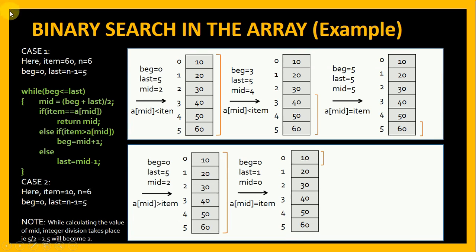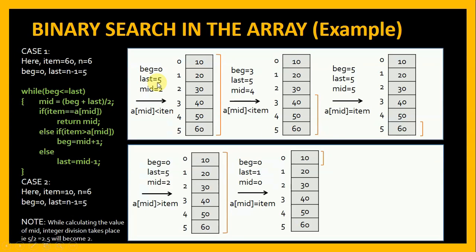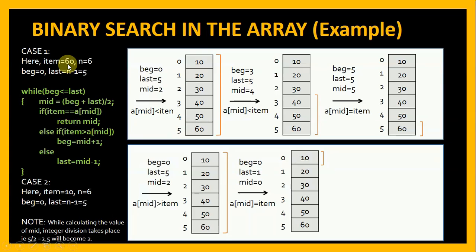Now let us see how binary search is actually performed — two cases. In Case 1 we are searching for 60. Beginning is 0, last is 5 (n minus 1). The condition beginning ≤ last is true. Mid = (0 + 5) / 2 = 2 (integer division, so 2.5 becomes 2). a[mid] is 30, which is not equal to 60. Item 60 is greater than a[mid] 30, so beginning becomes mid + 1 = 3. Last remains 5. Next iteration: mid = (3 + 5) / 2 = 4. a[4] is 50, not equal to 60. Item 60 is greater than 50, so beginning becomes 5. Last remains 5.